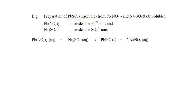To prepare lead sulfate, we use two soluble salts: lead nitrate and sodium sulfate — both of these are soluble in water. That is why in our equations we write them in aqueous form. When these salts dissolve in water, lead nitrate produces lead ions and nitrate ions, while sodium sulfate produces sodium ions and sulfate ions.